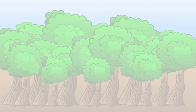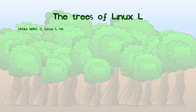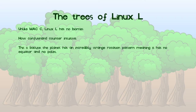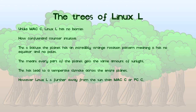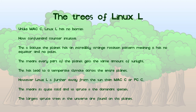This is the final tree slide, and it's on Linux L. Linux L is a strange inverted place with no biomes. This means it's very confusing to visit as everything looks the same. The planet has an incredibly strange rotation pattern with no axis — it just rotates around a point. It also lacks equators and poles. This means each part of the planet will receive the exact same amount of sunlight per day and per year. The entire planet has a temperate climate. Linux L is however the furthest of the three life-sustaining computer-sea planets. This means it's quite cold and therefore 90% of the trees are spruce trees. Some spruce trees grow to 128 meters on the planet. These are the largest known.